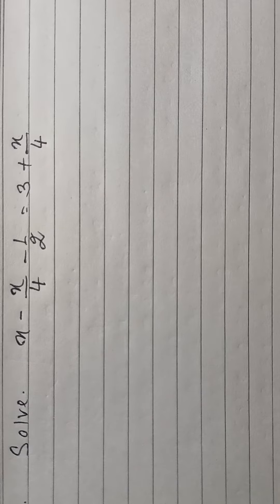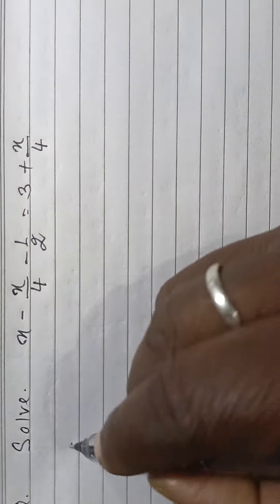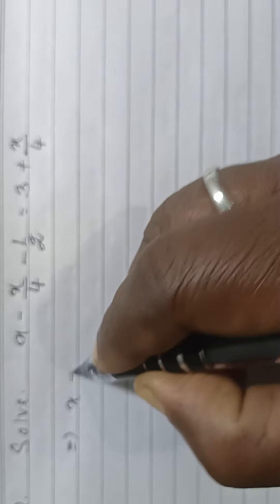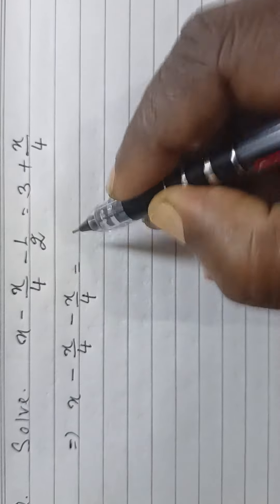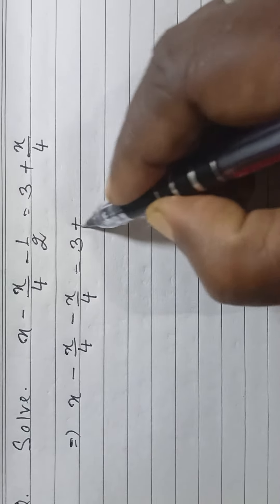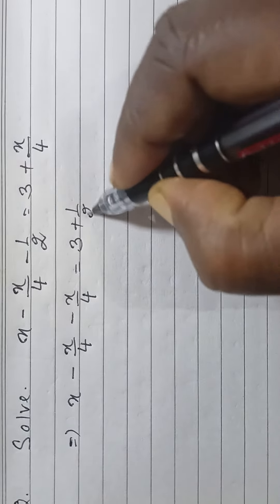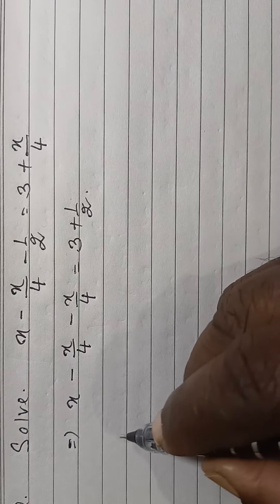Solve: x minus x by 4 minus 1 by 2 is equal to 3 plus x by 4. Keeping variables on the left hand side: x minus x by 4 minus x by 4 is equal to 3 plus 1 by 2.